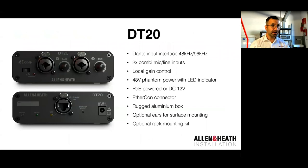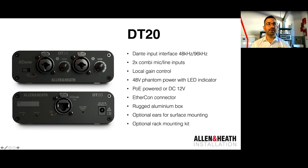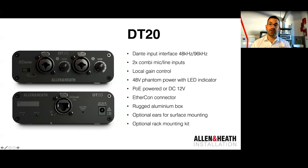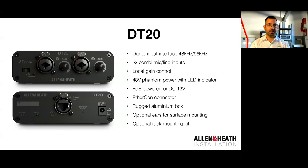First up is the DT20 — a two-input Dante interface that can run at 48 or 96kHz sample rate. It offers two combi inputs — mic inputs or line inputs — so you can connect two jacks, for example a PC line-level feed. The mic inputs have a local manual rotary gain and phantom power for both mic preamps. What's nice with all three of these boxes is they can be powered by a local 12-volt wall-wart power supply, or you can power them over PoE — power injected over Ethernet from a PoE-capable network switch or PoE injectors. All you need is a single network cable to power and give Dante audio to the device.